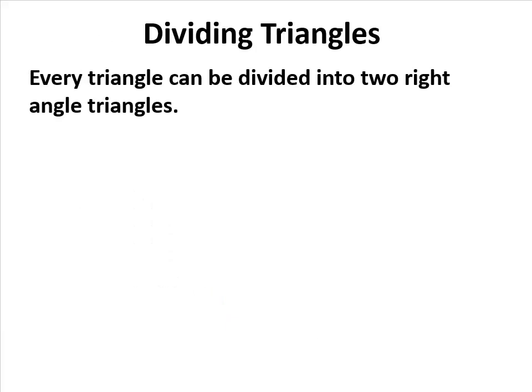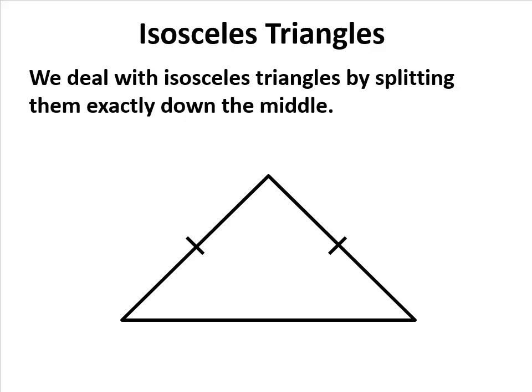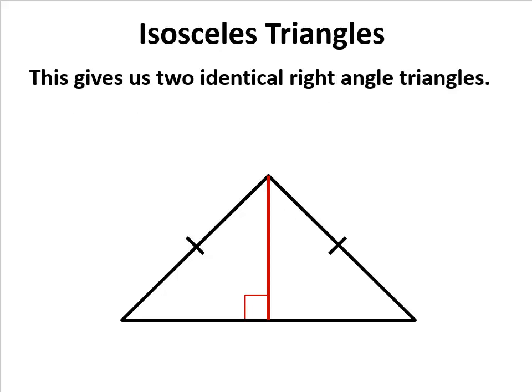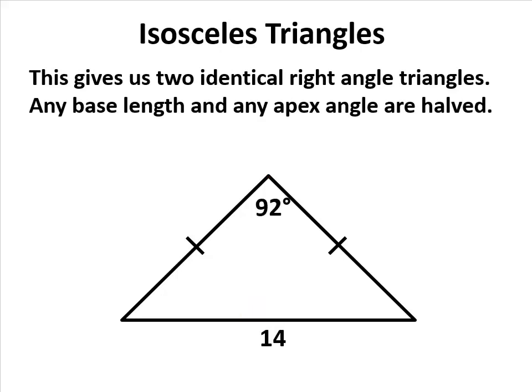Ordinary triangles can always be divided, but there's some special cases. If we have an isosceles triangle, we divide it down the middle. This is a fairly standard and very easy merit question. Once we've dealt with it down the middle, we have two equal identical right angle triangles, which means that the degrees at the top and the length at the base can be halved. The 92 is split into two 46s. The 14 is split into two 7s.